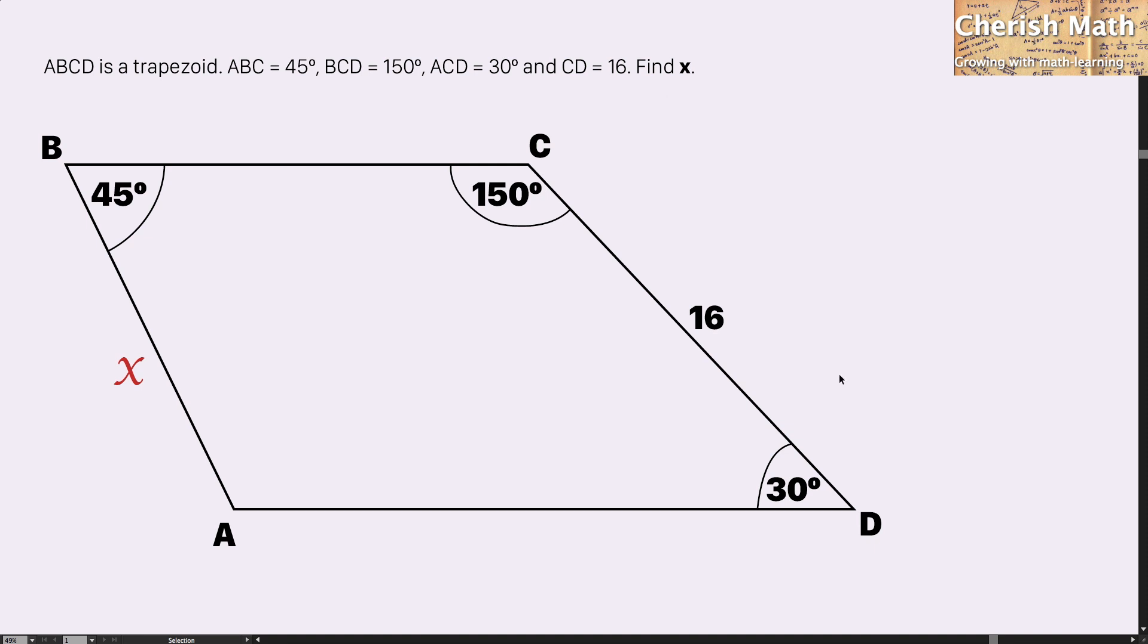Let me extend the line BC, and this is still a straight line. For the angle here, I'm going to use 180 degrees minus 150 degrees. That's 30 degrees here. Since this angle is the same with this, I can conclude that these two lines are parallel to each other.